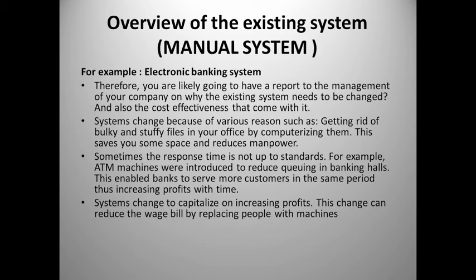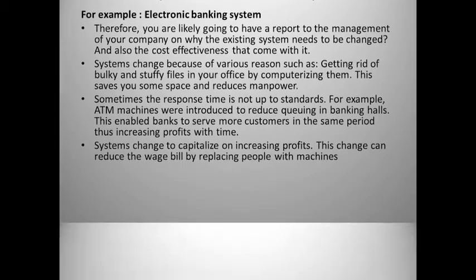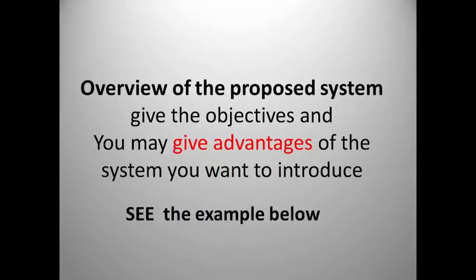Sometimes the response time of the manual system is not up to standards. For example, ATMs were introduced to reduce queuing in bank halls, enabling banks to serve more customers in the same period, thus increasing profits and efficiency — saving on time. System change can also reduce the wage bill by replacing people with machines. Basically, check what advantages a computerized system brings — for example, higher productivity, space saved, and reduced manpower.